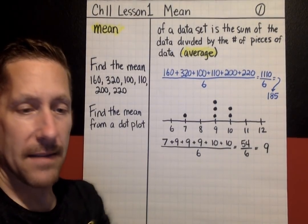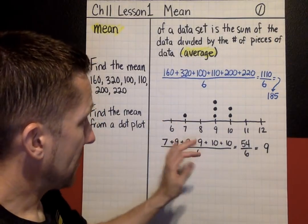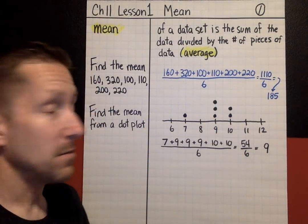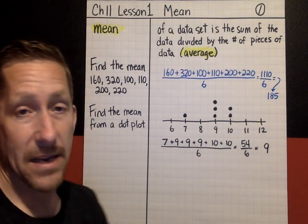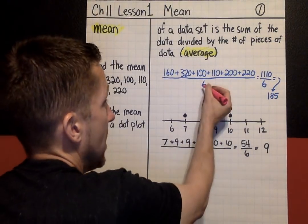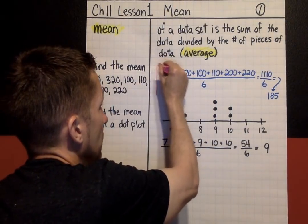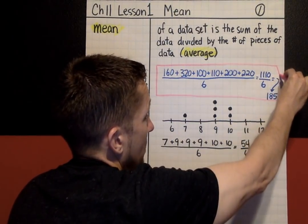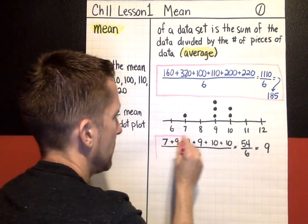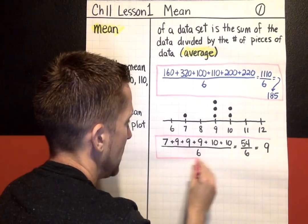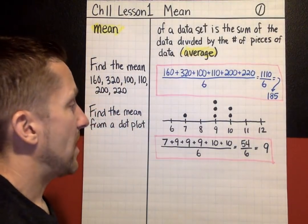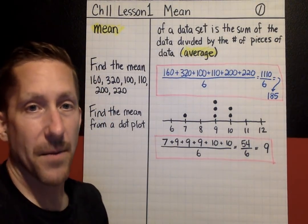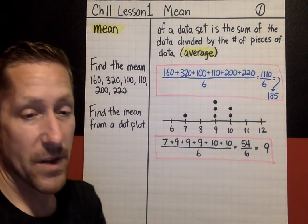Before we do the last example, if you're finding the mean, this is what your work should look like. You should be showing the total of all the values and what you're dividing by, how many data values there are. I should not just see a number, 185. I want to know how you got it. Finding the mean should be shown by the data values, what you're dividing by, and figuring it out. Not just a single number. I don't want to see just 185 or a 9. You're going to show me what you did to get there.